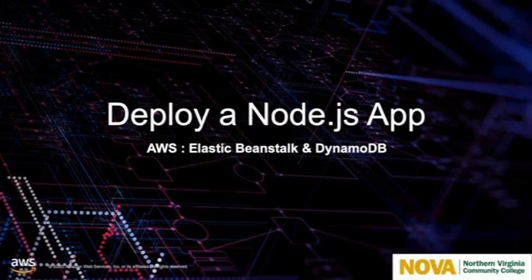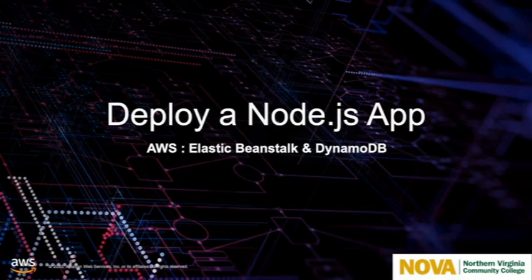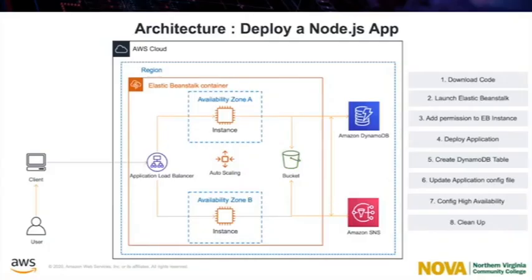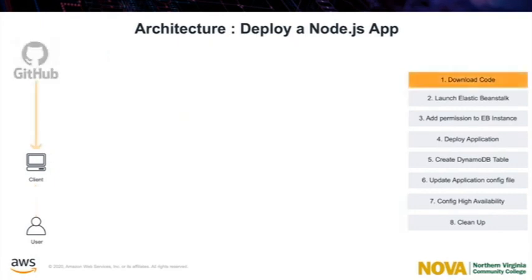Hello, welcome to the project: Deploy a Node.js Application in AWS. In this tutorial, we are going to deploy a very simple Node.js application using AWS Elastic Beanstalk and Amazon DynamoDB. The sample application uses the Express framework and Bootstrap to build a simple, scalable customer signup form that is deployed to AWS Elastic Beanstalk. The application stores data in Amazon DynamoDB and publishes notifications to Amazon Simple Notification Service when a customer fills out the form.